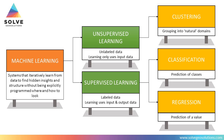Going back over some of these terms: under the banner of machine learning, what we're really referring to are systems that can learn from data without being explicitly programmed how and where to look. That can be something very simple — k-means clustering, for instance, is learning about the density distribution of your data. Something very complicated would be a deep neural network looking for objects in an image. They all fall under that same banner.